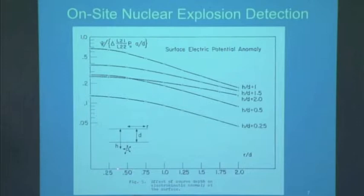This is an example of what he calculated, basically a normalized voltage as distance from the source. This is a spherical source. These are curves showing how the anomaly changes as the source moves above and below the boundary. So you get the largest anomaly when the pressure source is near the boundary, as you'd expect from what we'd shown before.